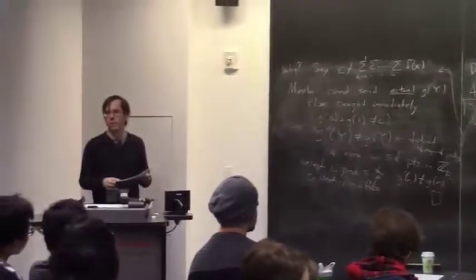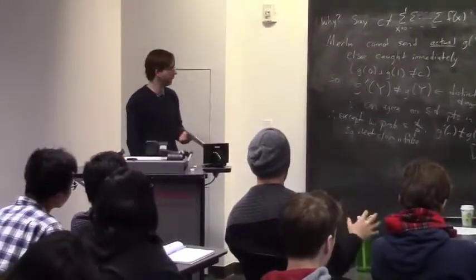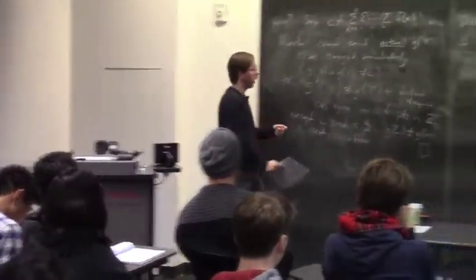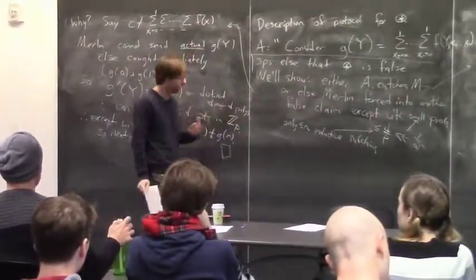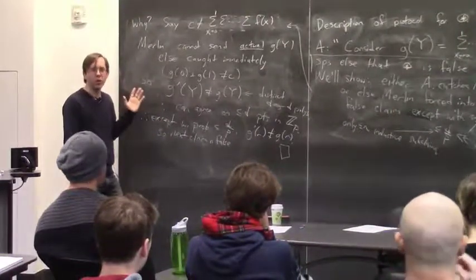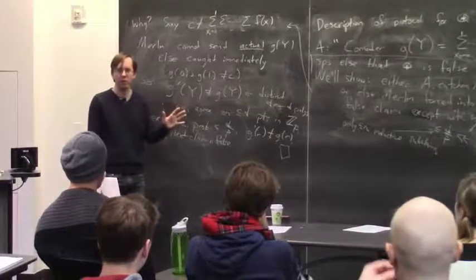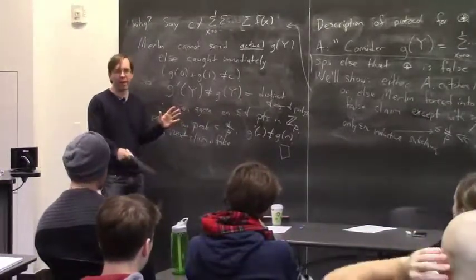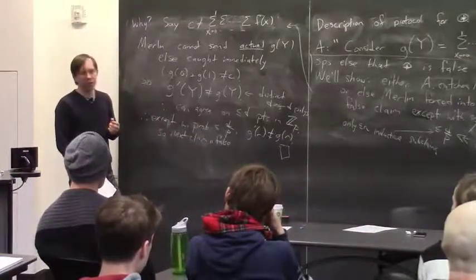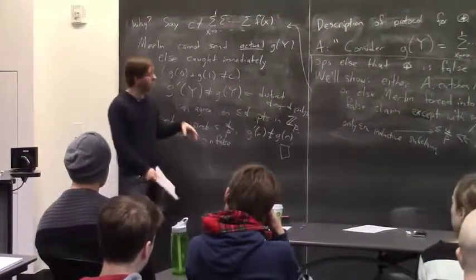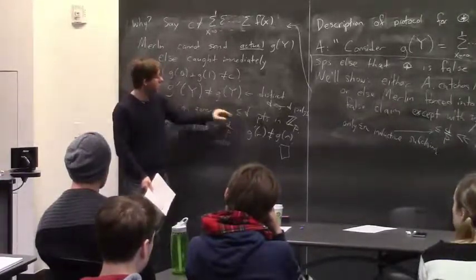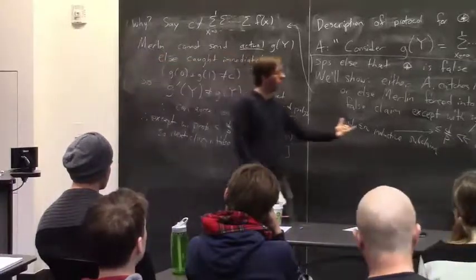A question arose: why can't p be a polynomial in n rather than exponential? The only reason is that at the beginning, the true number of satisfying assignments is an integer between 0 and 2^n, so as long as p is bigger than that, taking mod p doesn't matter. In fact, when we do IP equals PSPACE, we'll see a situation where p can be polynomial in n—you just need it large enough that you can union bound over n rounds.